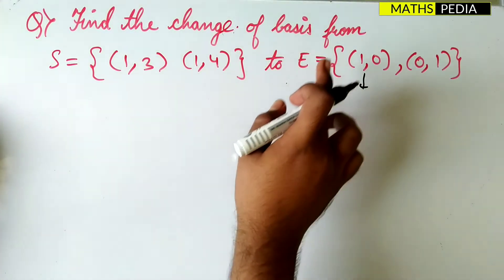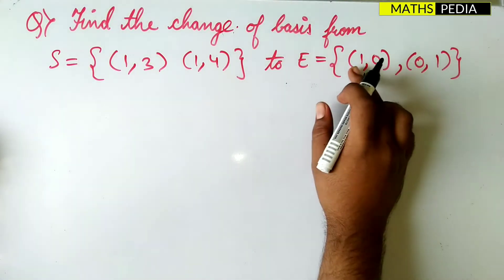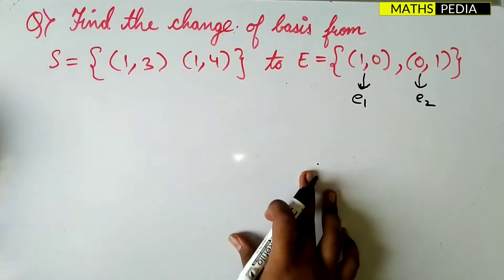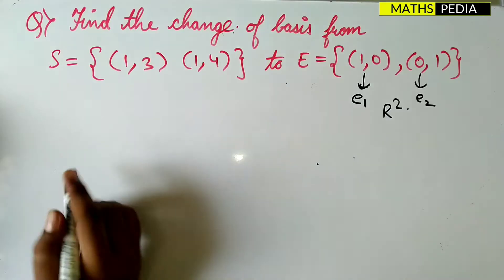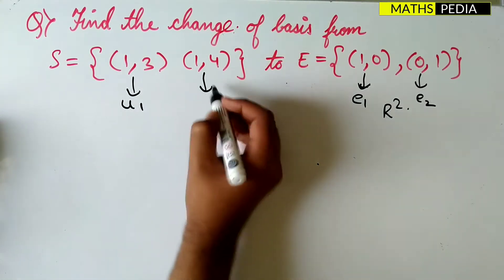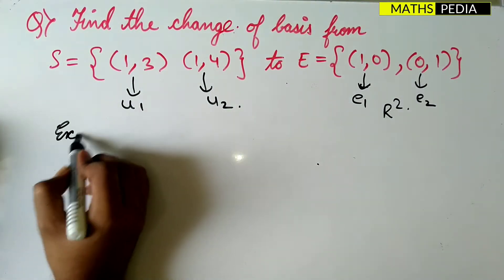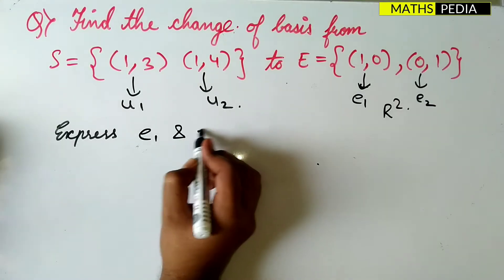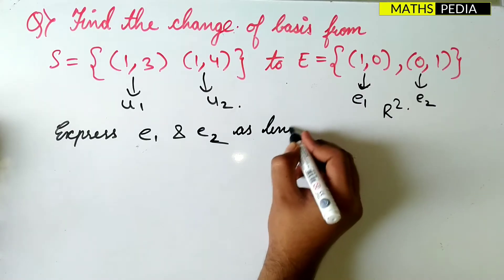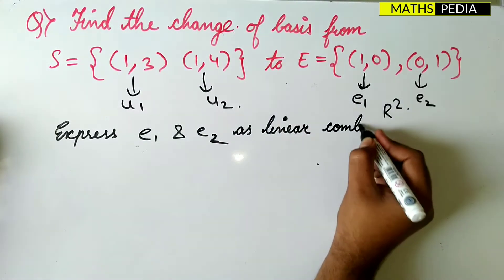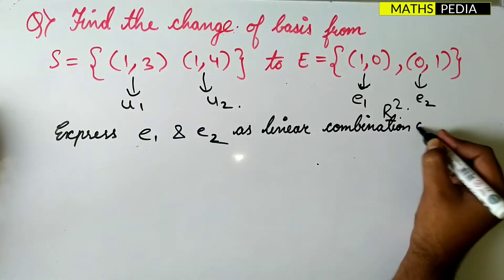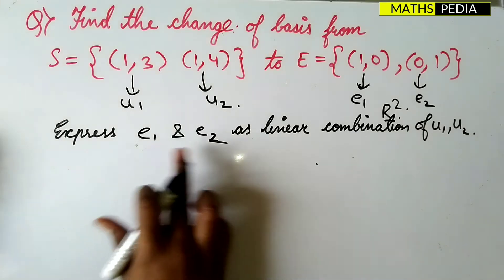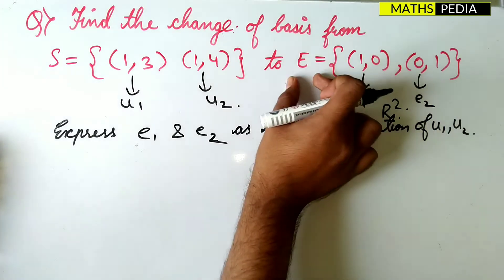From S to E, this is the standard basis E. I'll assume this one to be u1 and this one to be u2. The first step is that you have to express e1 and e2 as a linear combination of u1 and u2. Observe carefully what I am doing — expressing e1 and e2 because it is a change from S to E.